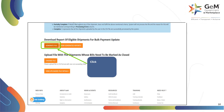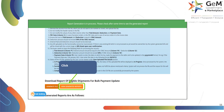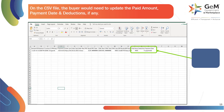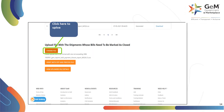The user can click on generate file to create the pending payment report file. Click on view generated reports to generate the payment due report. The user can download the payment report by clicking on the download tab next to the file name once it is generated. The user can enter the payment date and payment deductions if any for the specific shipment, then click on choose file to upload the CSV file.